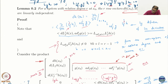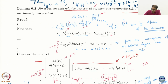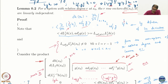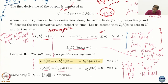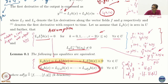By the relative degree argument and using the previous lemma, L_{ad_f^k g}(Lf^l h) is going to be non-zero for k + l = r − 1 and equal to 0 for k + l < r − 1. The lemma says that these Lg Lf^k conditions being 0 imply the ad bracket versions are also 0, so until r − 2 these are 0, and at r − 1 we get non-zero.